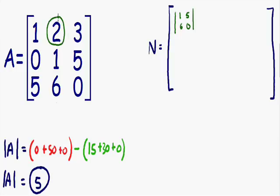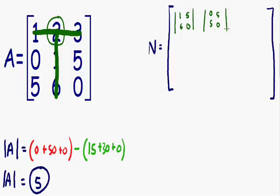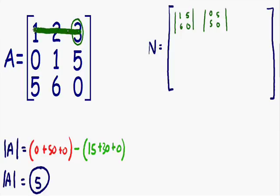Moving to the top middle number, 2: cross out its row and column and we're left with the 2 by 2 matrix 0, 5, 5, 0. Place that in the top middle position. For the top right number, 3: crossing out its row and column leaves the 2 by 2 matrix 0, 1, 5, 6. For the top left number, 1: crossing out its row and column leaves 1, 5, 6, 0 in the top left position.